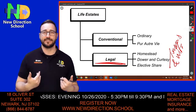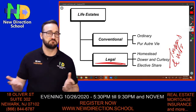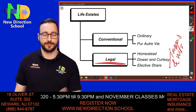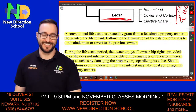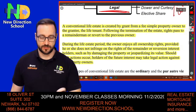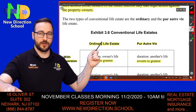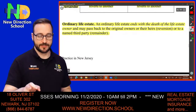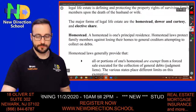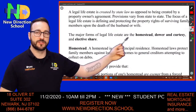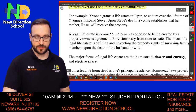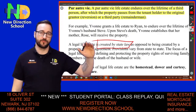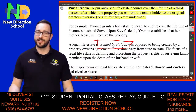Homestead, dower and curtesy, and elective share are created by state law as opposed to being created by a property owner's agreement. Now let me address who would do something like a life estate and why. Most normal people don't have financial education about property preservation, so most people who do this understand estate preservation.